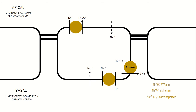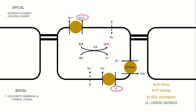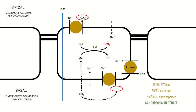The third transporter responsible for water movement is the apical sodium-bicarbonate co-transporter that encourages flow of bicarbonate from the cell into the aqueous. As bicarbonate and hydrogen deplete, more and more bicarbonate and hydrogen is formed via the carbonic anhydrase pathway. High concentration of hydrogen in the stroma causes stromal acidification and encourages carbon dioxide into the cell via passive diffusion. The net result of all this action is an osmotic gradient encouraging movement of water from stroma into the aqueous.